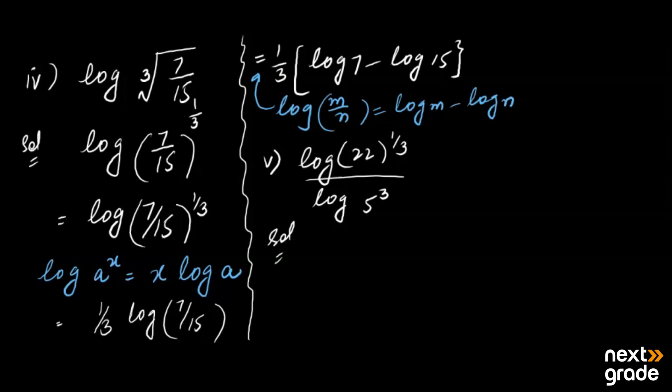If we have to simplify it, we can see that there are two different numbers which are divided: log of 22 to the 1 by 3 upon 5 raised to the power 3. This is a full number which is divided.